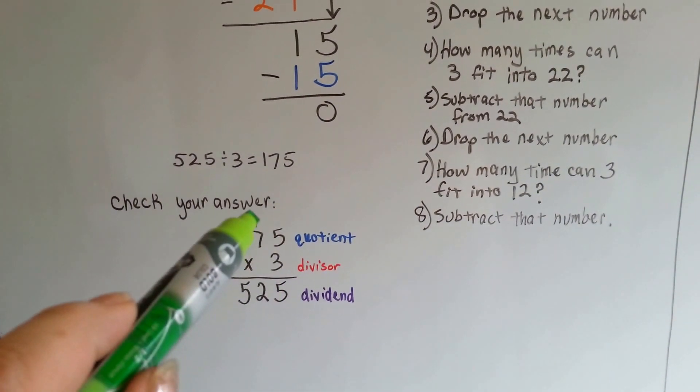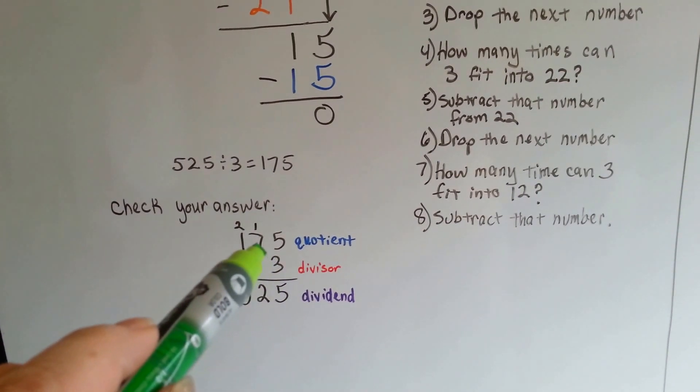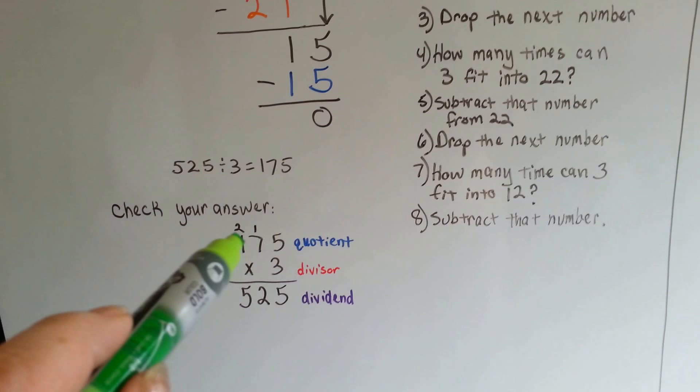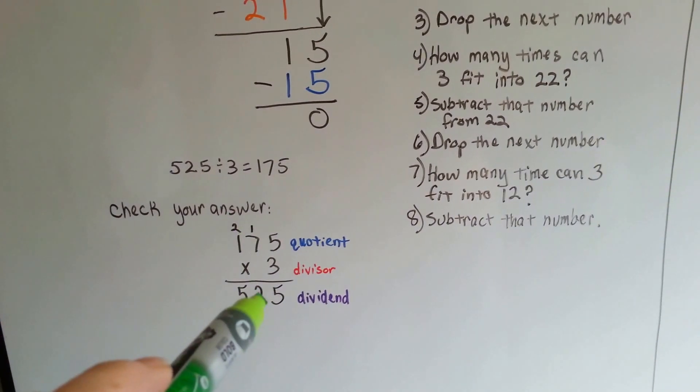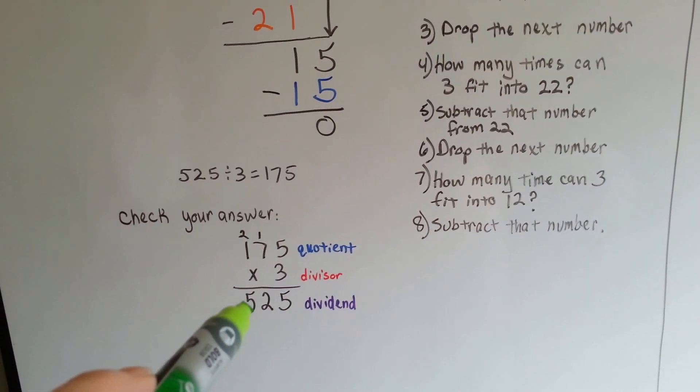3 times 5 is 15. We carry the 1 and put the 5 down. 3 times 7 is 21, plus that 1 is 22. We carry the 2 and put the 2 down. 3 times 1 is 3, plus the 2 is 45, 525.